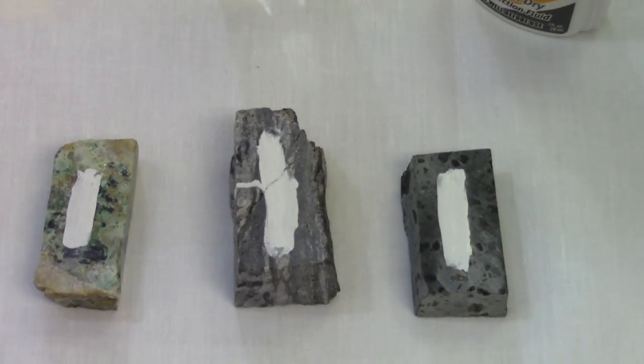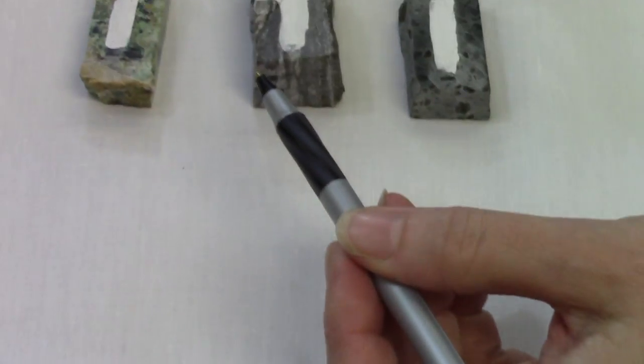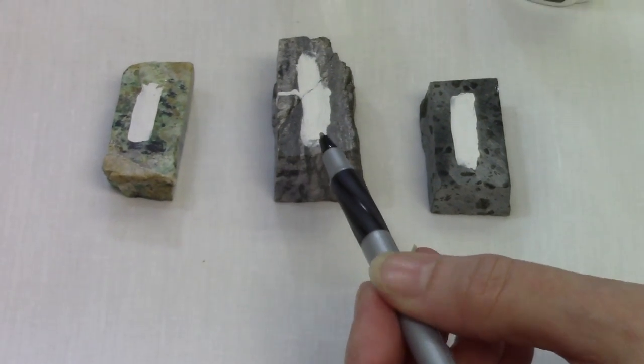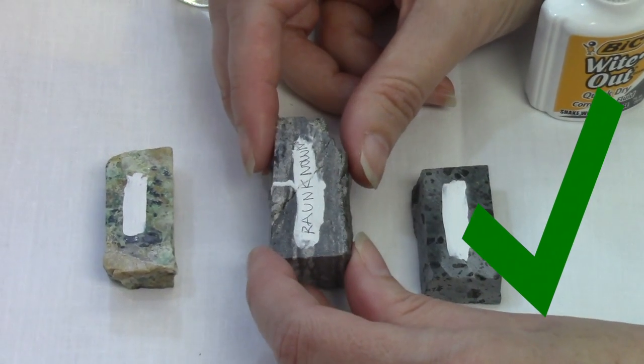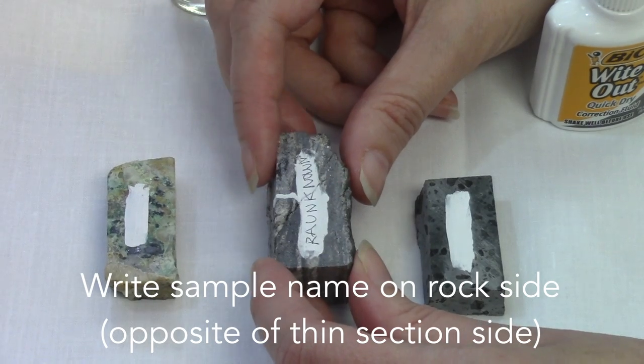Once they're dry, you can write the sample name or number on the rock. This is perfectly acceptable and you don't need to go any further than this.